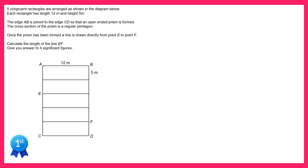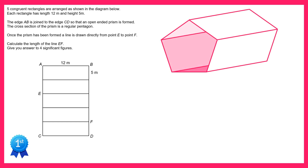Hello and welcome to the solution video to spicy question number 37. In this question we've got five rectangles and we're going to join them together to make an open-ended prism where the cross-section is a regular pentagon, so it'll look something like this.